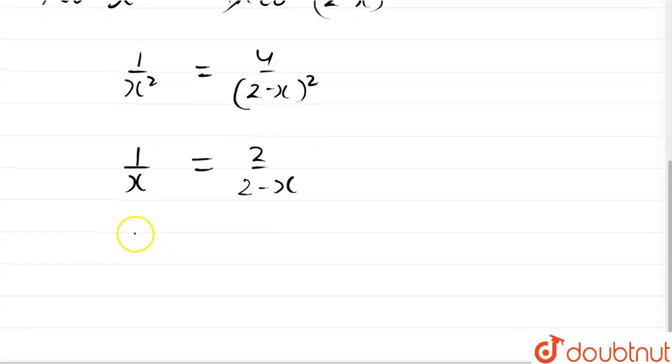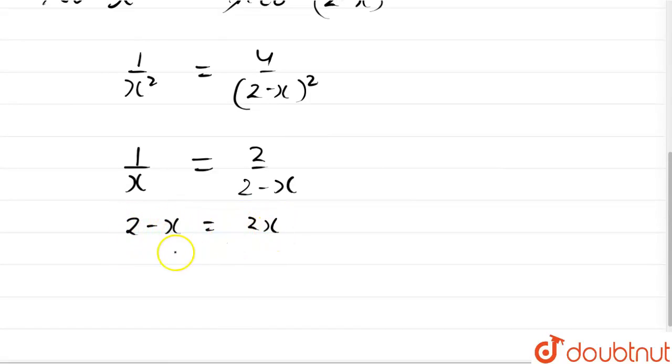Now cross multiplying these we get 2 minus x is equal to 2x or 2 is equal to 3x or x is equal to 2 upon 3 meters.